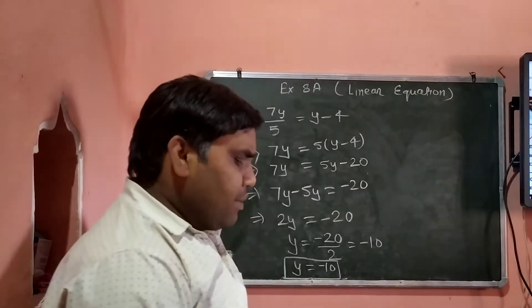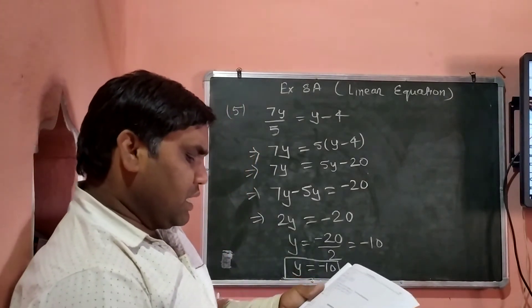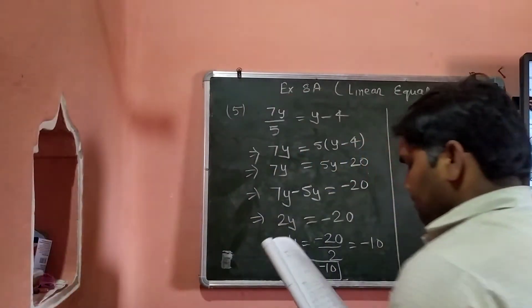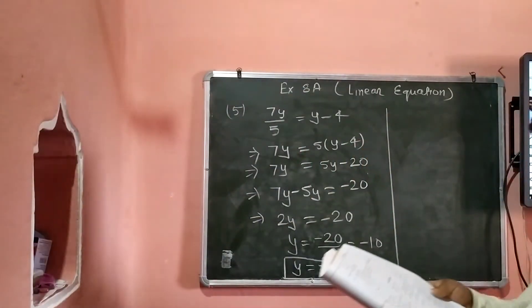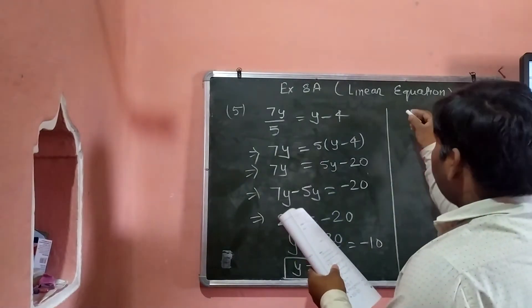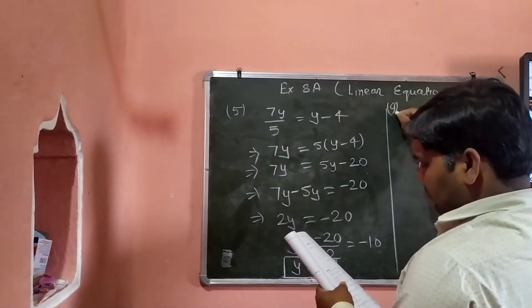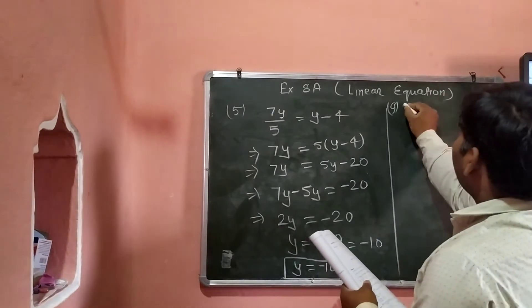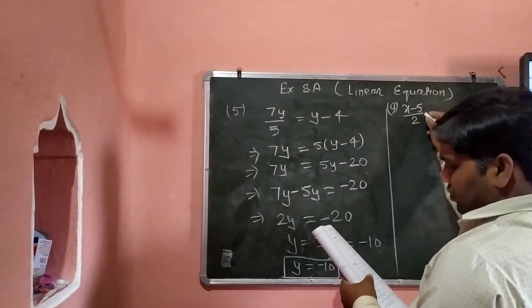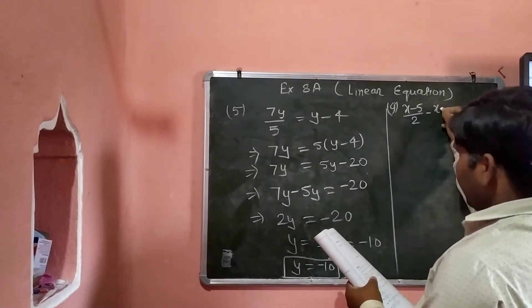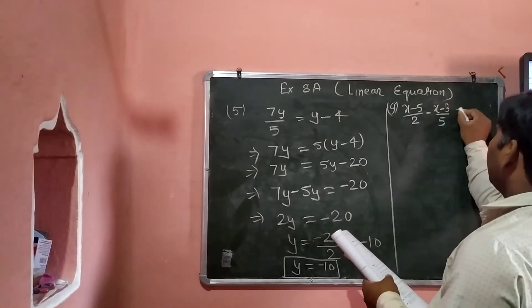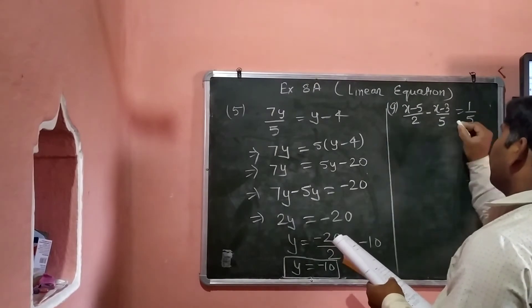Verify भी करना है — चलो एक और question देखते हैं। 9th number: x minus 5 by 2, minus x minus 3 by 5, equal to 1 by 5.